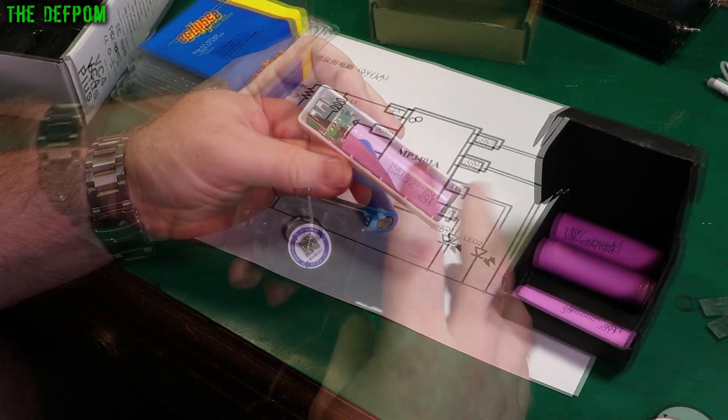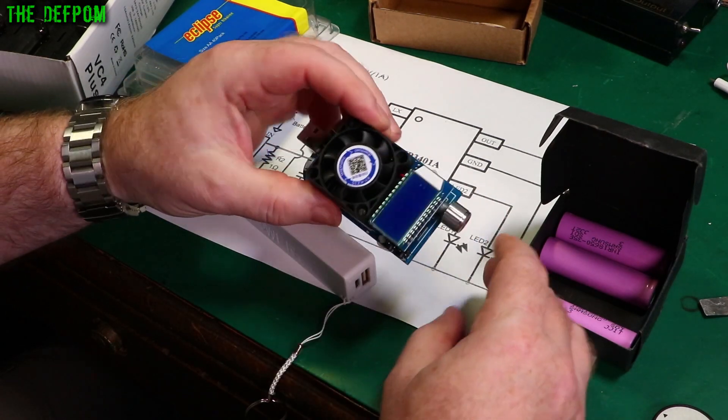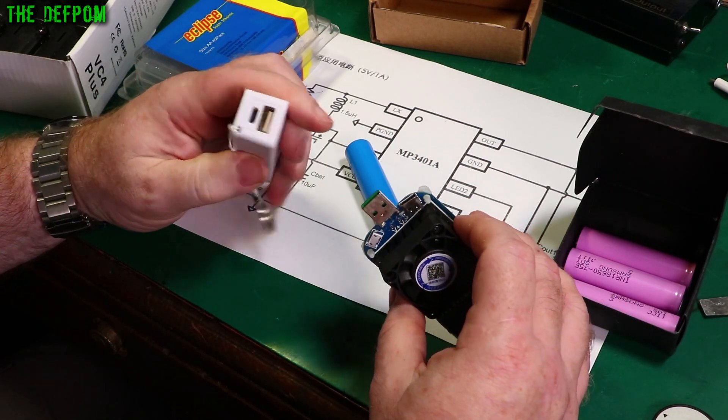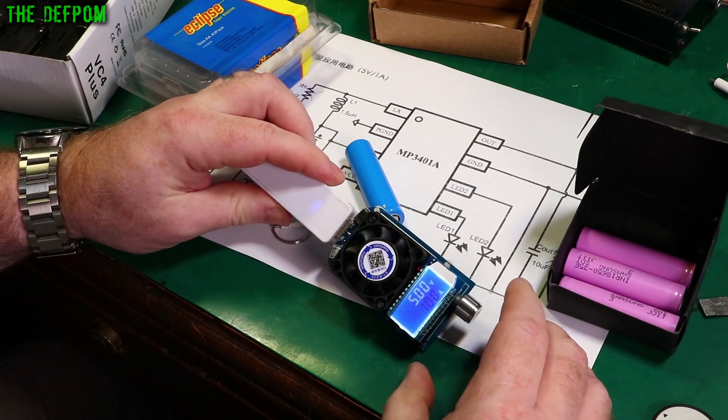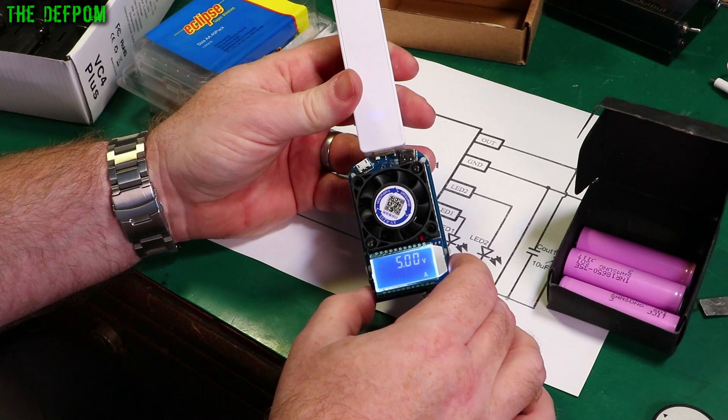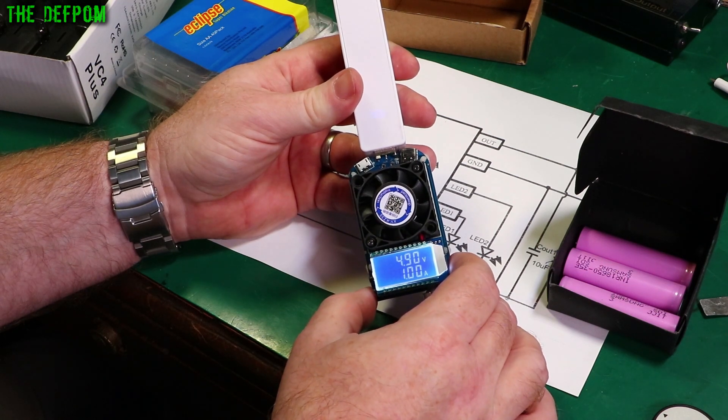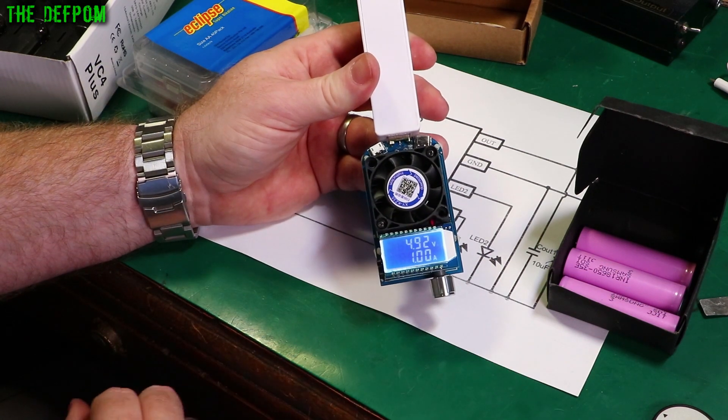Alright, so I've got these little USB load testers here. Obviously I do have a DC electronic load as well, but I want to use this because it's easy to see on camera. 5.1A. Stop. Stop is also a start.